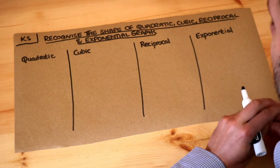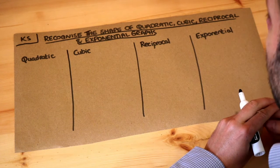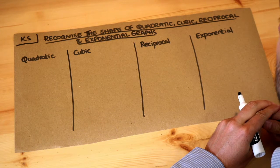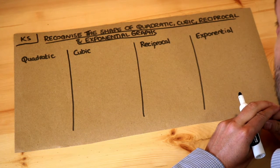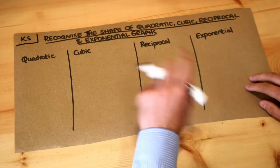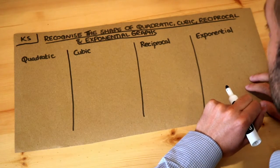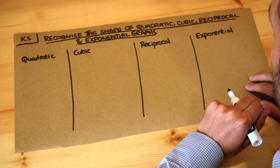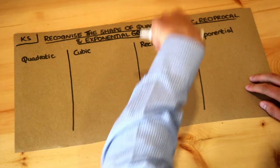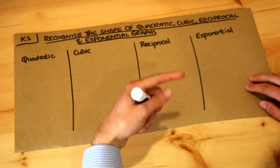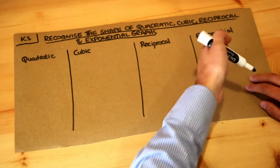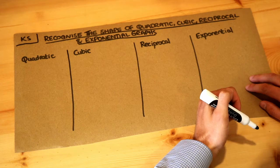Hello and welcome to this Dr. Rosemath's key skill video on recognizing the shape of quadratic, cubic, reciprocal and exponential graphs. In previous videos we looked at how to plot these various graphs and we ended up with a particular shape. So quadratics for example you might remember always have either a smiley face shape or a kind of hill shape, and we're going to see that again but we're also going to see the shapes of other graphs when we plot them.